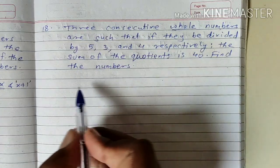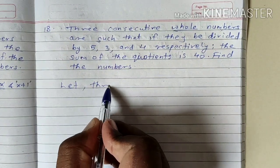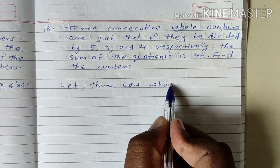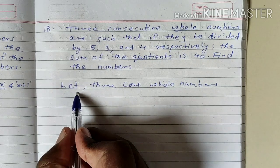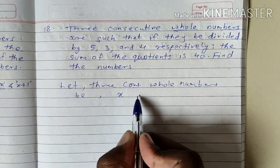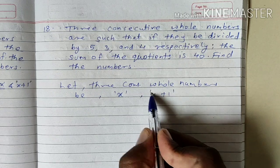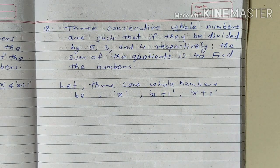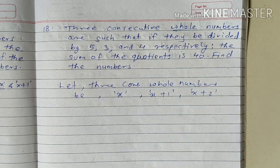Three consecutive whole numbers. Let the three whole numbers be x, x plus 1, and x plus 2. These are three consecutive whole numbers because there is a difference of one in each whole number.